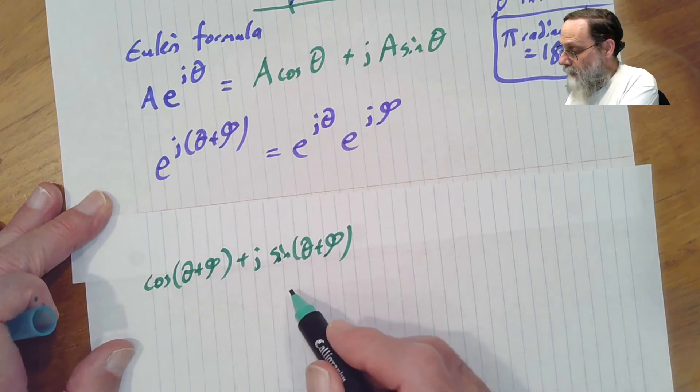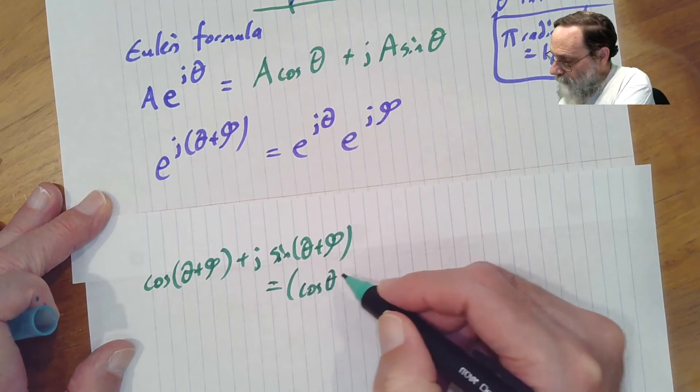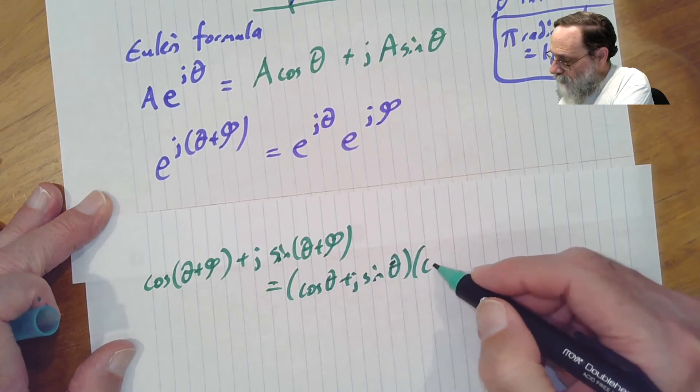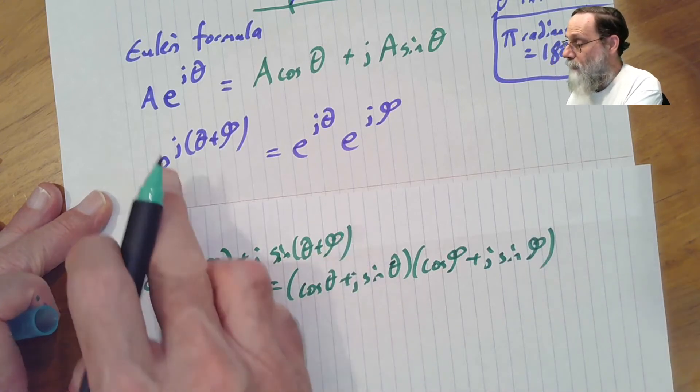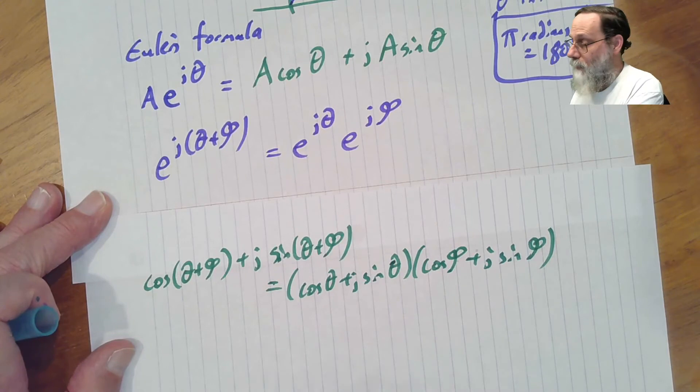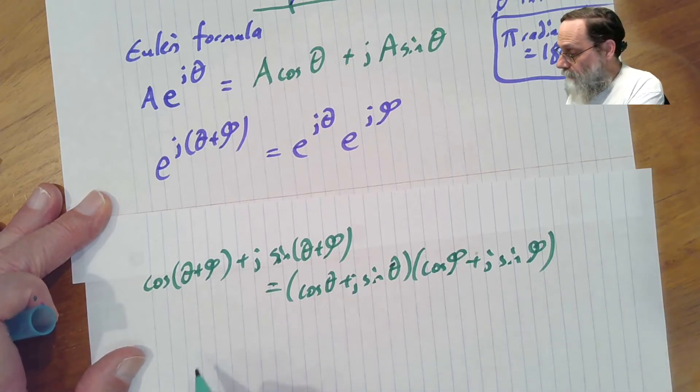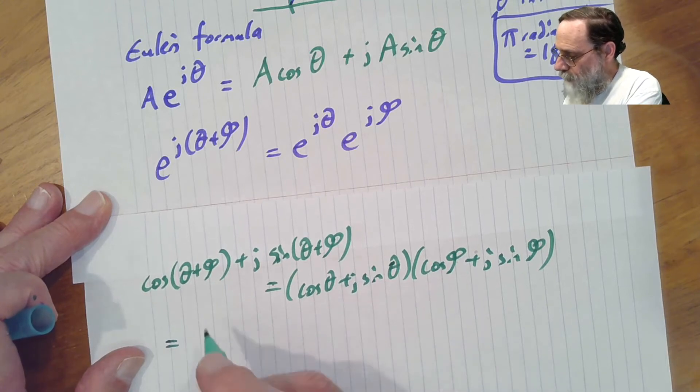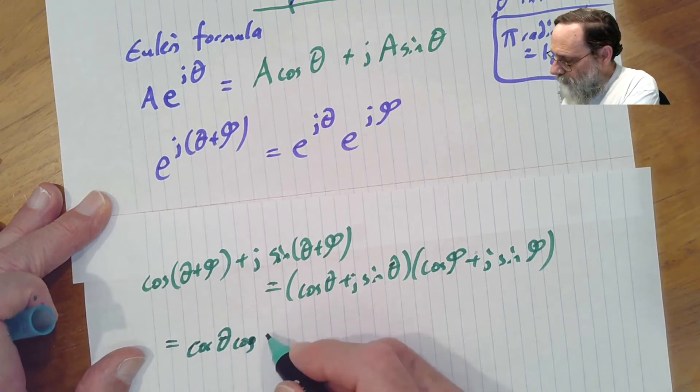And that's going to be equal to, now looking over on this other side, cosine theta plus j sine theta times cosine phi plus j sine phi. So I've just applied Euler's formula to each one of these exponentials, converting everything from polar coordinates to Cartesian coordinates. Now I can multiply this thing out. It's just algebra. And I get this is equal to, I'm going to do the two real parts first. Cosine theta, cosine phi.